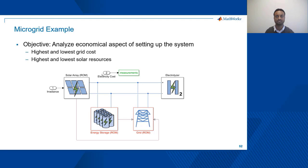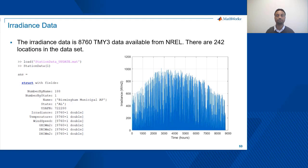Once we have these two as inputs, we can run multiple simulations for those 242 locations to understand and answer these important questions: the highest and lowest grid cost and the highest and lowest solar energy captured from the system.